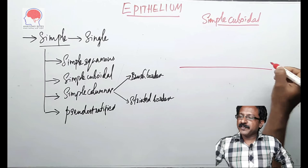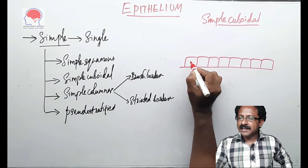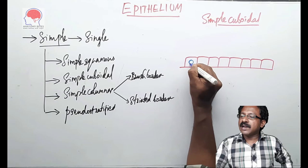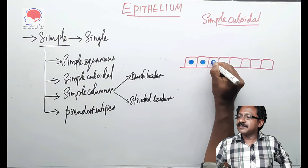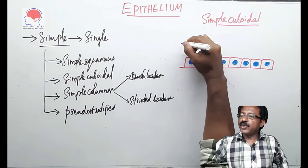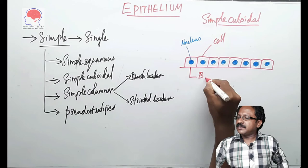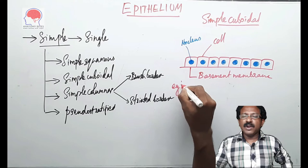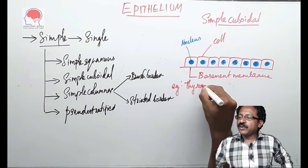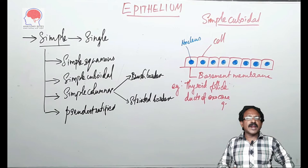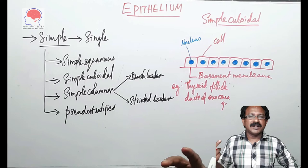Simple cuboidal. The basement membrane. The cells are cubical. So it has same height, same width and same thickness. The nucleus is large, prominent and it is placed at the center of the cell. It is nucleus. Epithelial cell. Basement membrane. Example of location of simple cuboidal epithelium is thyroid follicle. Ducts of exocrine glands. The moderately active thyroid is said to be the typical example of simple cuboidal epithelium.